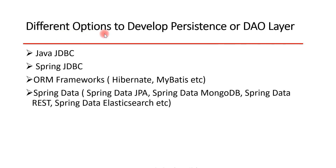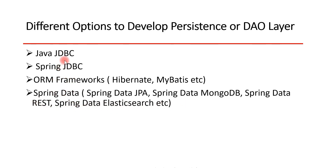What are the different options to develop a persistence or DAO layer in the Java community? We can use Java JDBC, Spring JDBC, ORM frameworks such as Hibernate, EclipseLink, etc. We can also use Spring Data, which provides different sub-modules like Spring Data JPA, Spring Data MongoDB, Spring Data REST, Spring Data Elasticsearch, and more.